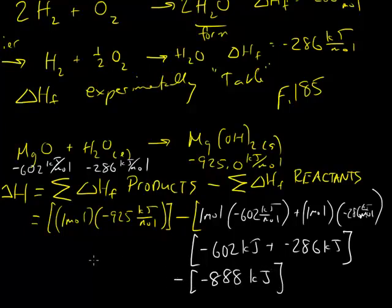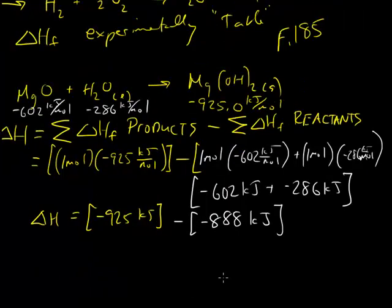This value over here is the negative 925 kilojoules when we multiply out the moles. And now to find the delta H, we just add these two numbers up, so to speak. So we've got negative 925 minus negative 888. So negative 925 minus negative 888 gives us a delta H value of negative 37.0 kilojoules.